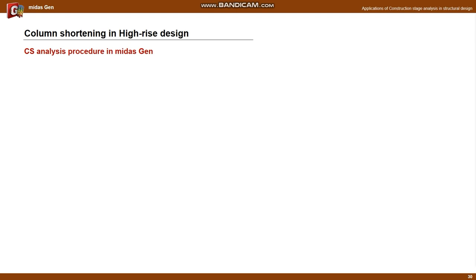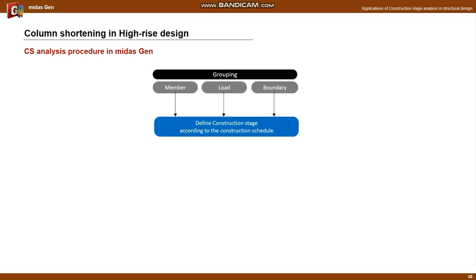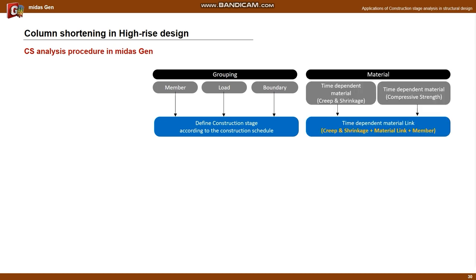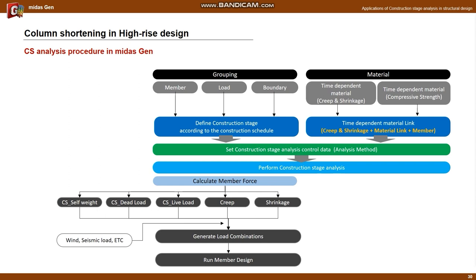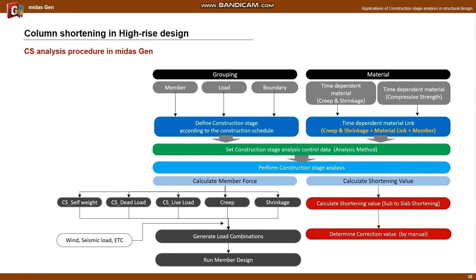The following is the progress of the column shortening project using General. First, create groups for members, loads, and boundary elements in order to set the construction stage. According to the construction schedule, group information should be assigned to define each construction stage. Next, define the time-dependent material properties such as creep, shrinkage, and compressive strength, and link each defined material property to each member. Analysis is performed using the defined construction stage and inelastic material information. We can obtain the member force for each gravity load, creep, and drying shrinkage through this analysis, and can create a load combination including wind and seismic load. It is then possible to do a design that reflects the column shortening using these load combinations.